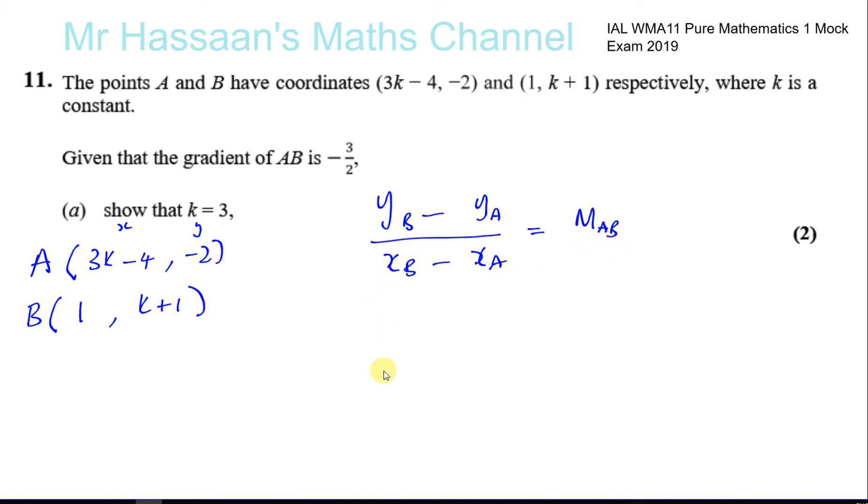Okay, so we can say yB minus yA over xB minus xA and that's going to equal the gradient of the line AB. Okay, so we can say yB, which is k + 1, minus minus 2, k + 1 minus minus 2, be careful of the negative sign. And you've got 1 minus, and you've got 3k - 4, again be careful, maybe I should have done it the other way around, but no problem. Okay, xB minus xA, 1 minus 3k - 4 is equal to -3/2.